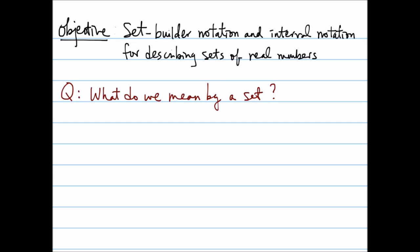A formal definition of a set is a collection of similar objects. For example, a set of alphabets can be denoted as S equals – this is the set notation – the curly braces, A, B, C, D, E, and so on.